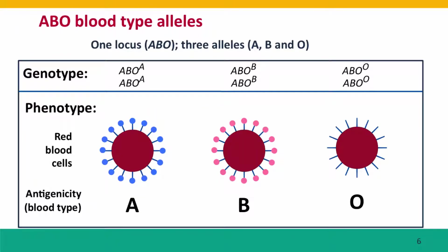Now I want to move on to think about one somewhat more complex situation, and that is the alleles that control the common ABO blood types. Whenever you get a blood transfusion or you're a donor at a blood bank, your blood type is always checked for which of these three phenotypes you have.